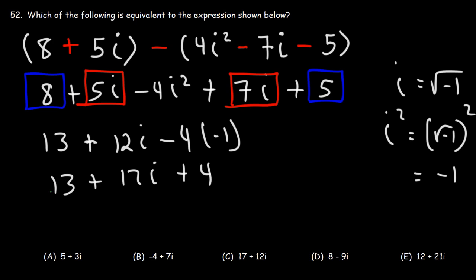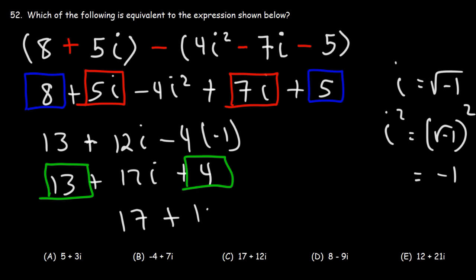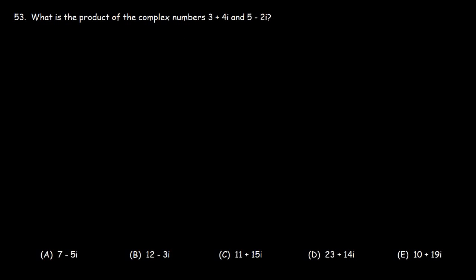Now let's add 13 and 4 — 13 plus 4 is 17. So we have the answer 17 plus 12i. That's answer choice C.